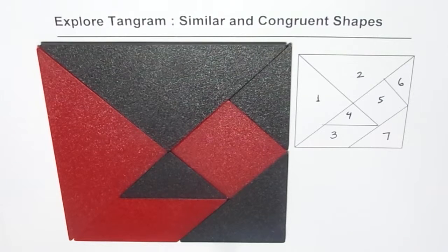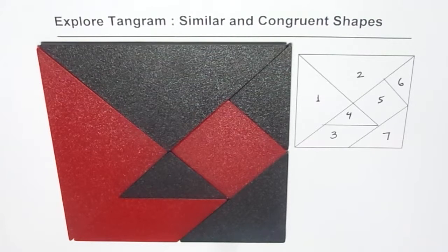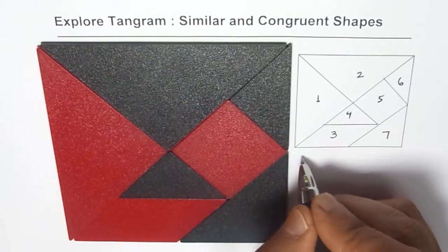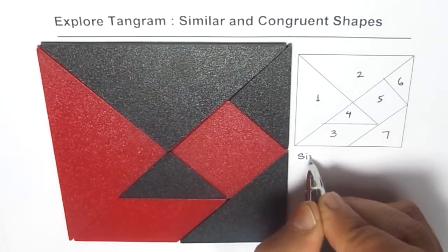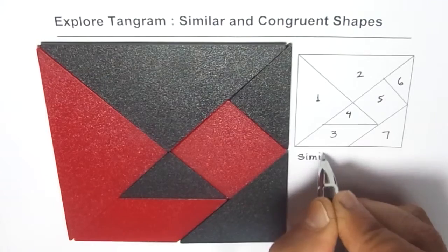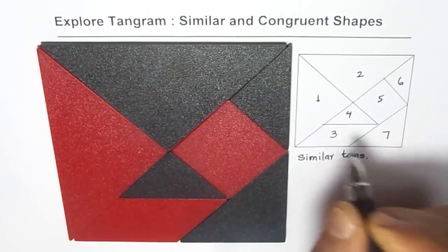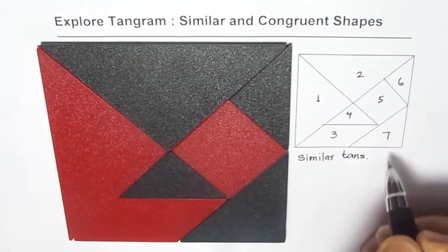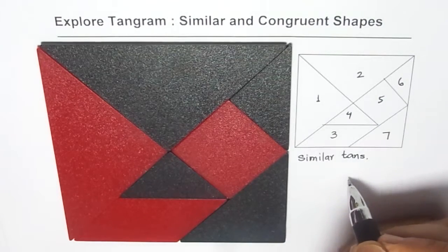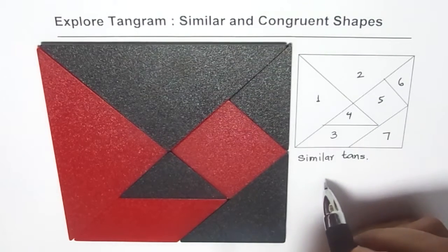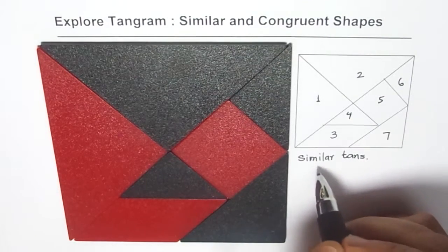Similar means that their shape is the same but their size is not necessarily the same. Let us look for similar pieces or similar tans. These seven pieces are individually called tans. So can you name similar tans?